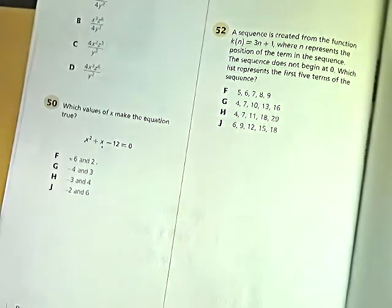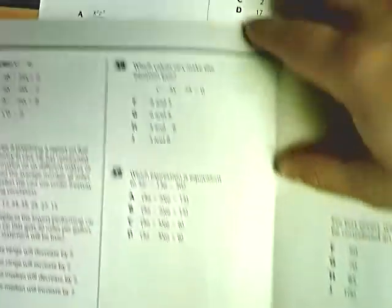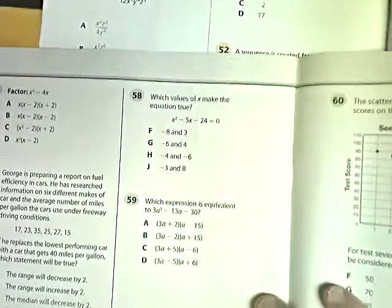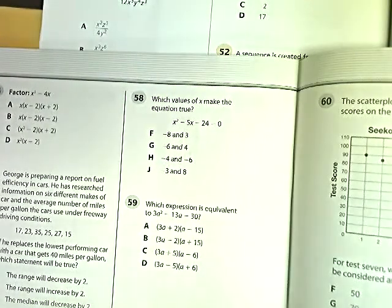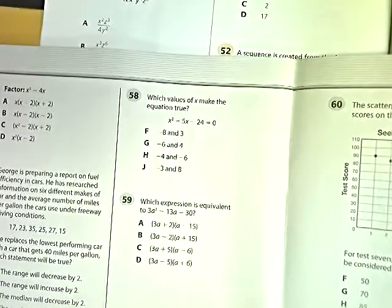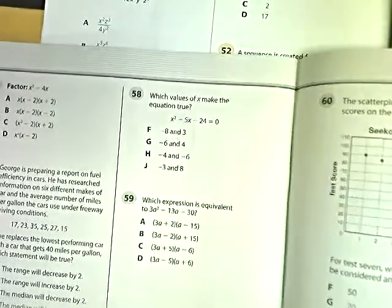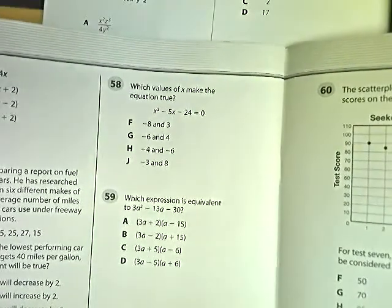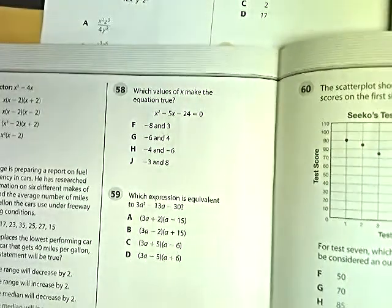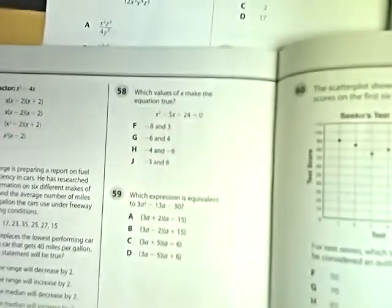Now, the big problem for you to work is in the other book, which, of course, I laid down over here very inconveniently. So, number 58, which values make this equation true? x squared minus 5x minus 24 equals 0. Is it negative 8 and 3? Is it negative 6 and 4? Is it 4 and negative 6? Or is it negative 3 and 8? I'm going to try to pull this out so you can actually see the problem. Let me do a refocus and see if that works.